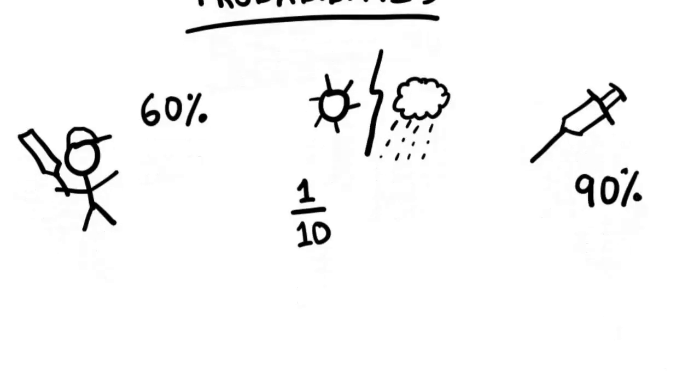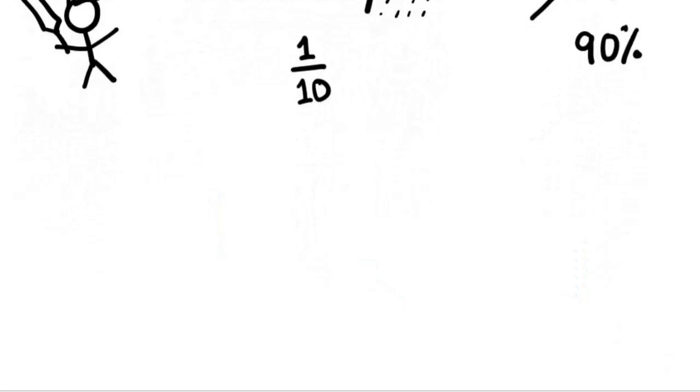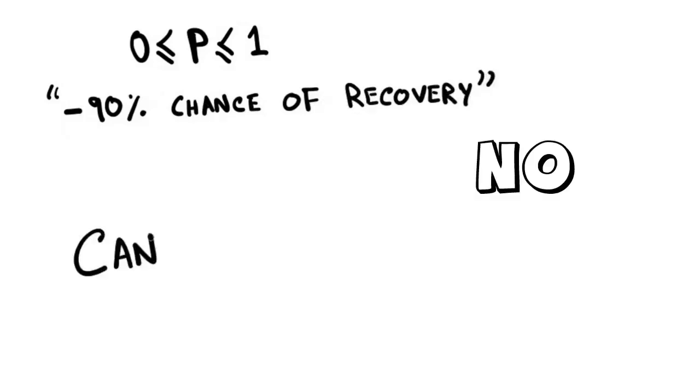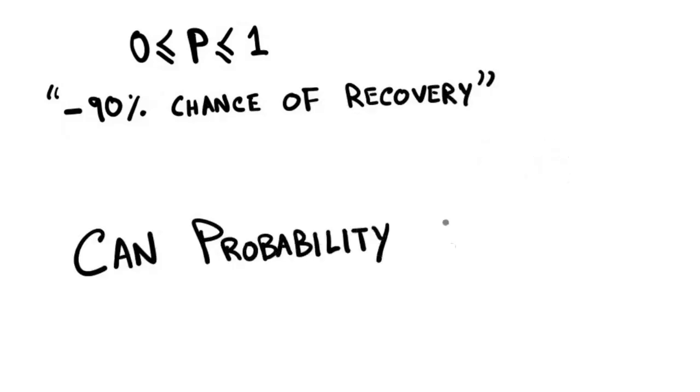Note that all these statements talk about positive numbers, more precisely fractions ranging between 0 and 1. Can probability be negative? Can we have a statement like there is a minus 90% chance of recovery after taking the vaccine? No, that clearly sounds wrong.